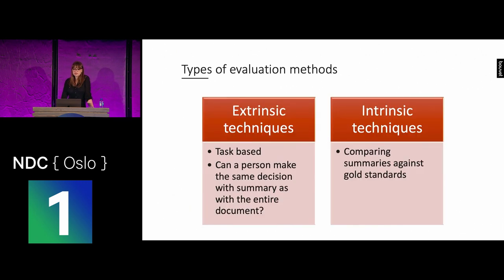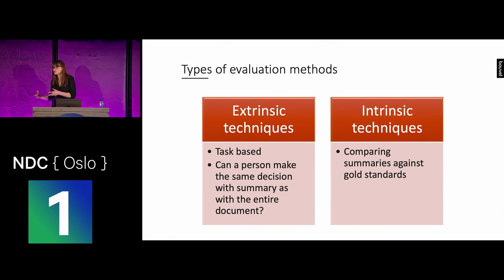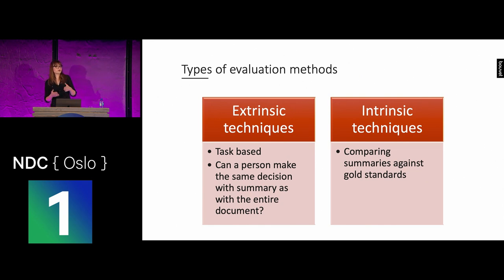There are two different methods to evaluate these models. Extrinsic techniques are task-based and probably the better way to evaluate, though they require a lot of manual work. You divide users into two groups: one group gets the complete document, the other gets only the summary, and you give them tasks — maybe classifying documents, clustering, or answering questions about the content. If the group that only read the summary can make the same decisions and get the same results as the group who read the whole document, then you know your summaries are good. However, this requires a lot of time and people, so usually we don't do that.